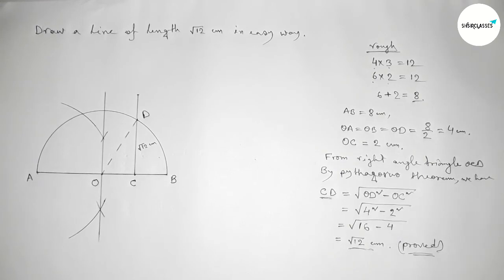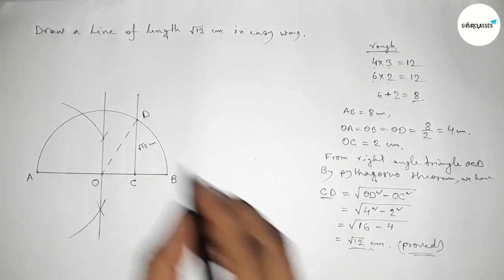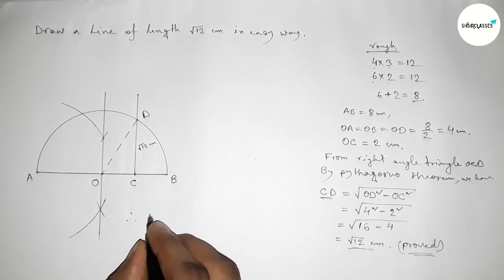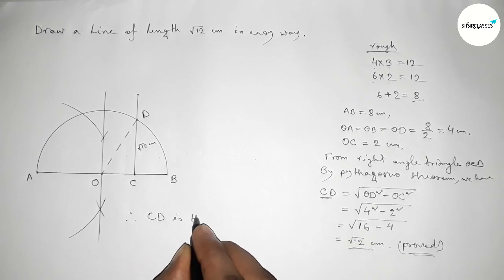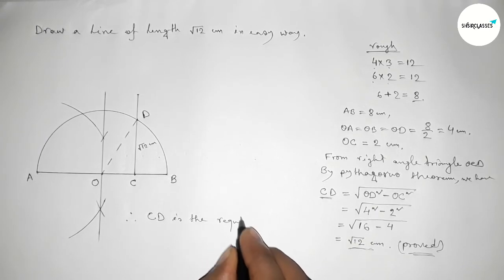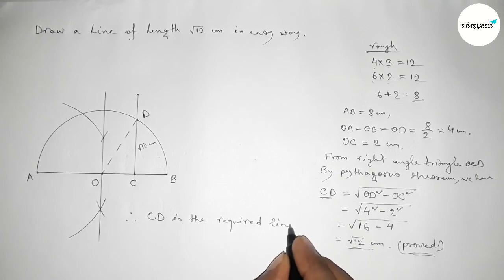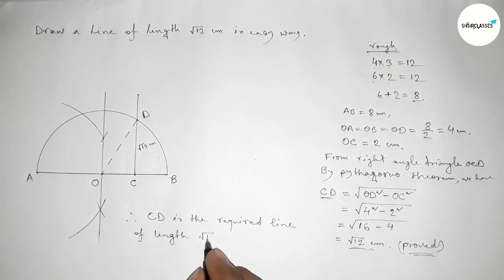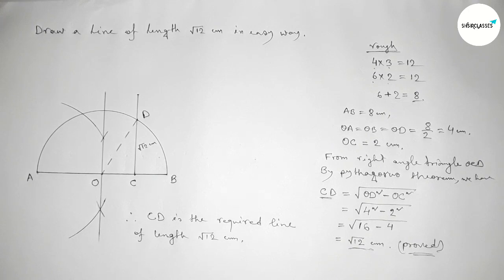So the length of CD equals root 12 centimeter — that's the proof. Therefore CD is the required line of length root 12 centimeter. By this method you can construct a line of length root 12 centimeter. Thanks for watching, please share it with your friends.